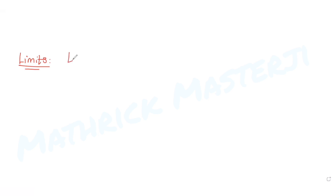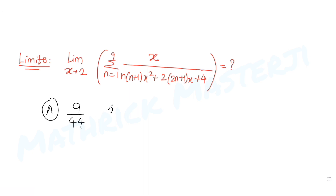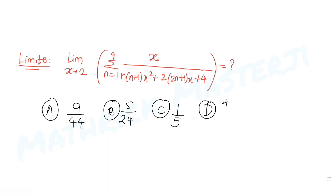The question tells us: limit of x tends to 2, and the expression given is summation of n equals 1 to 9 of x over n(n+1)x² + 2(2n+1)x + 4. The answer choices given are: 9/44, 5/24, 1/5, and 7/6.